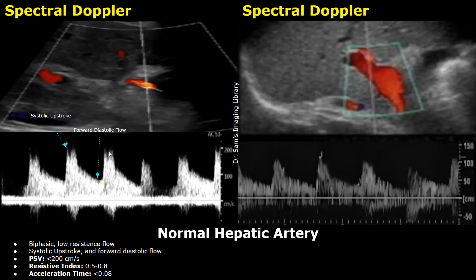A biphasic flow is usually a low-resistance blood flow. The top point of the systolic peak is the peak systolic velocity (PSV). In normal cases, it is less than 200 centimeters per second. In this case, it is almost 200 centimeters per second but does not exceed it. The next parameter is resistive index, which is normally between 0.5 and 0.8, and the acceleration time is less than 0.08 seconds. In the second image, the PSV is just over 100 centimeters per second, so it is a normal blood flow.